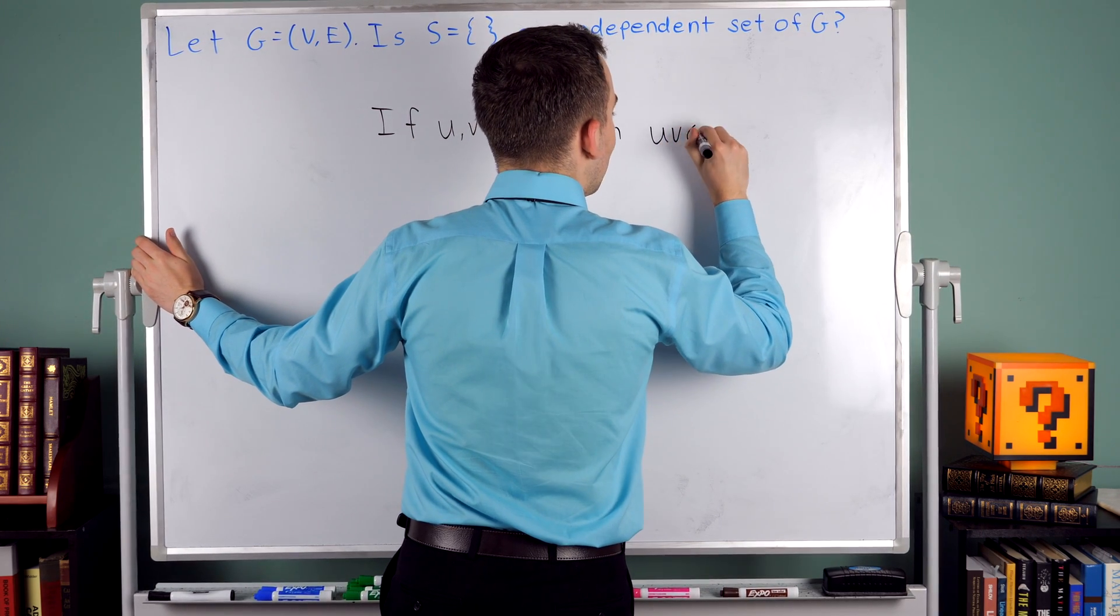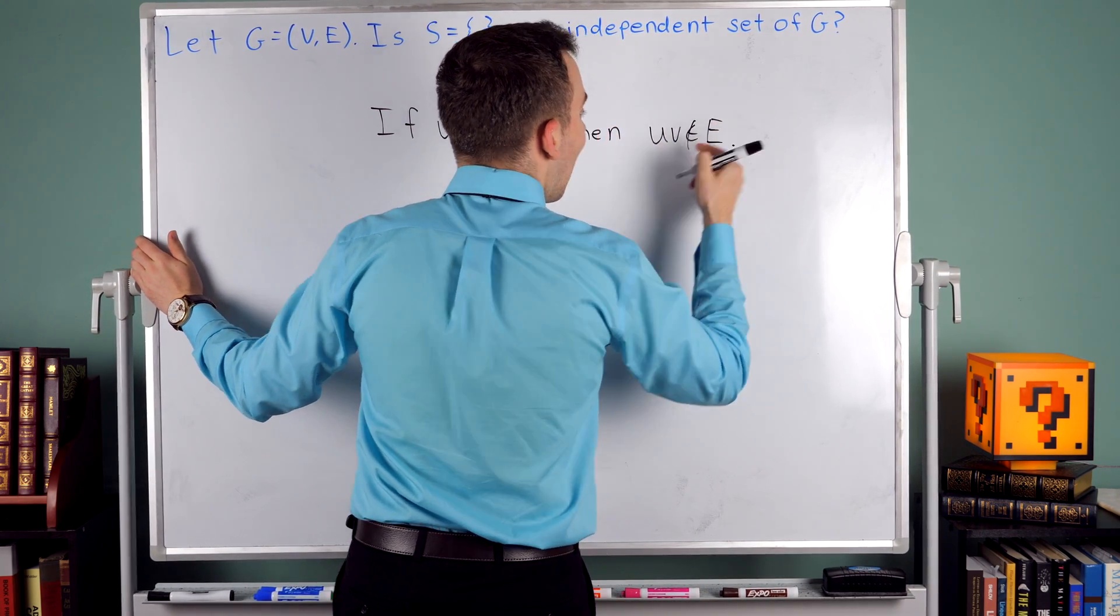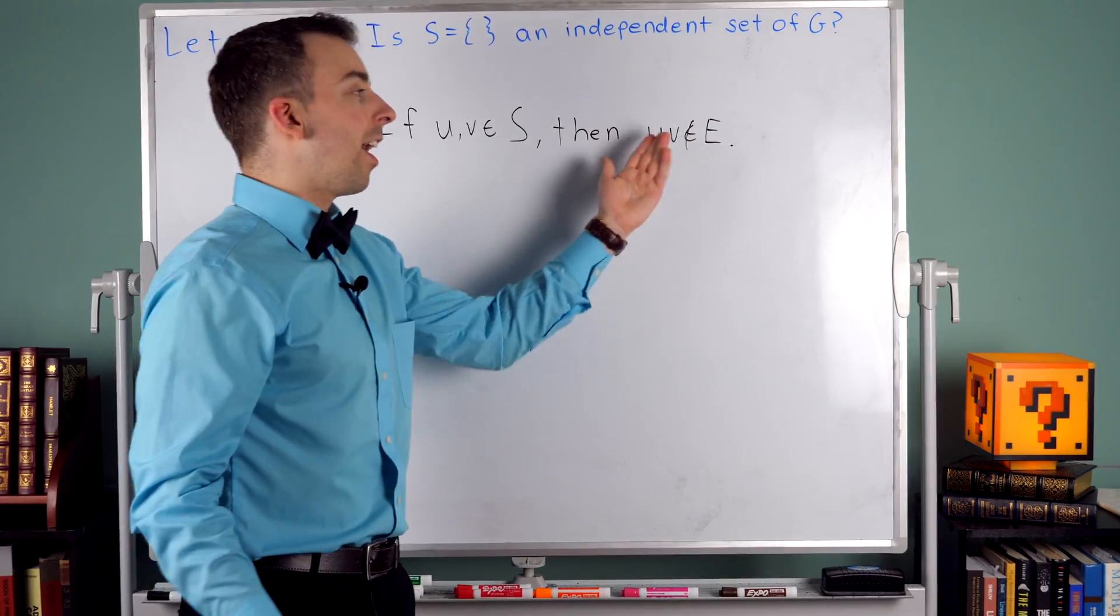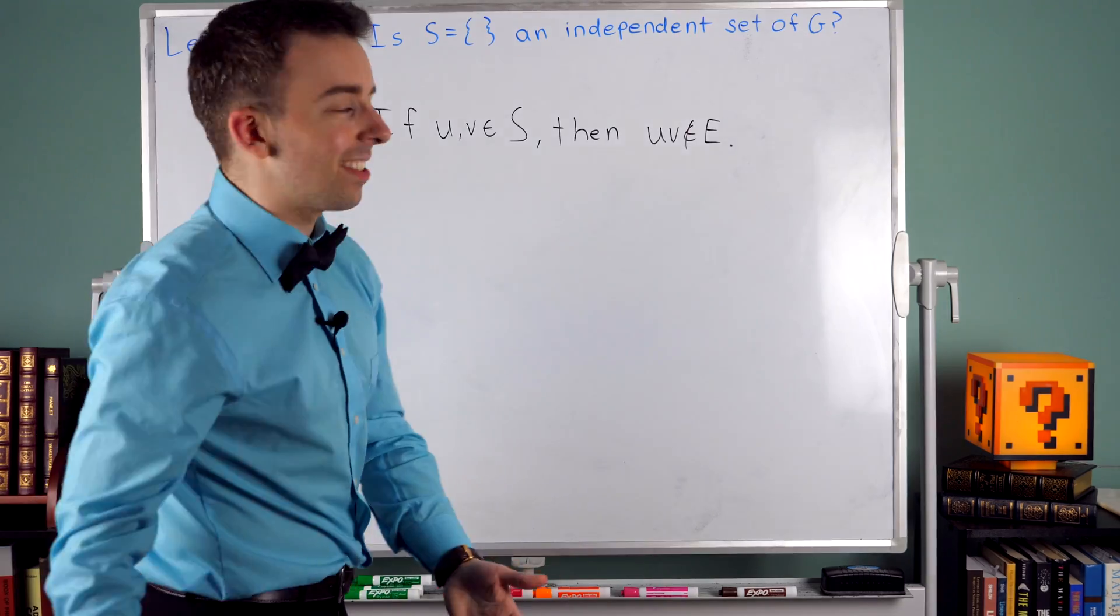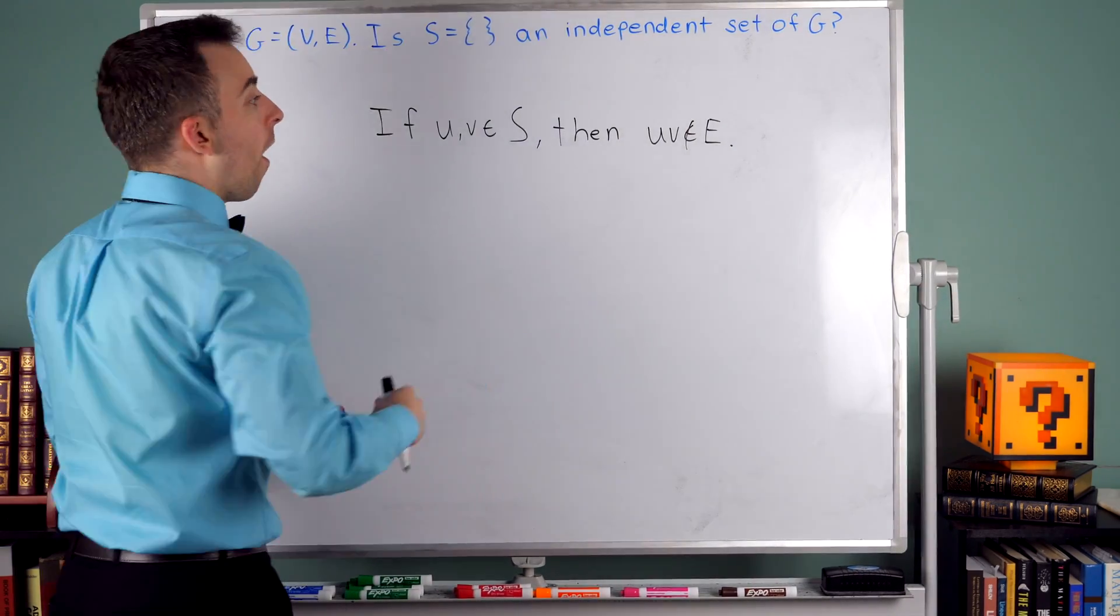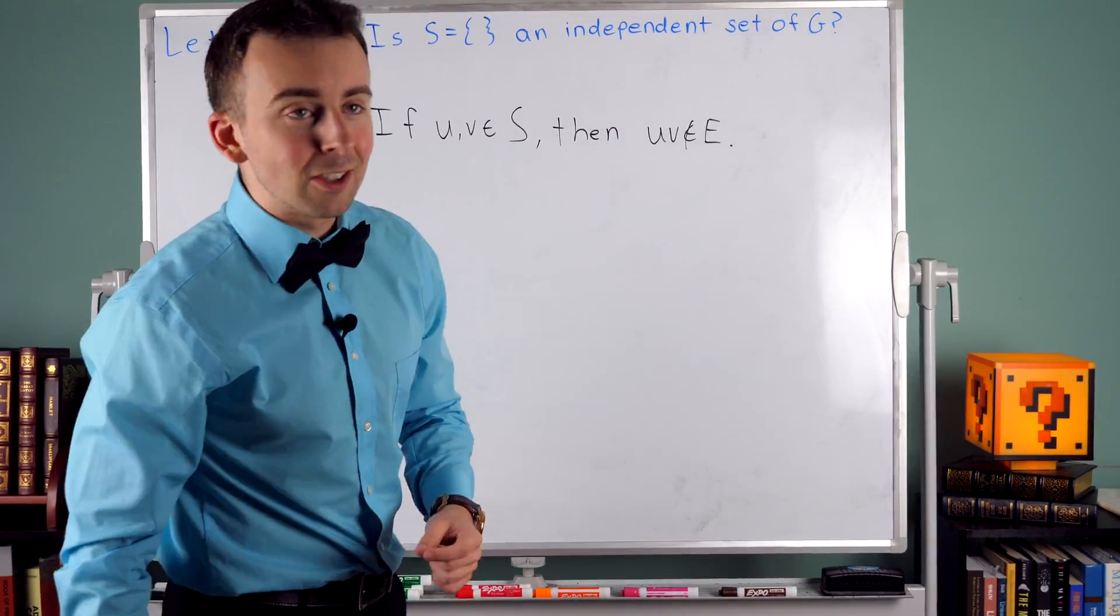then they are not adjacent. So then U, V is not an edge. U and V are not joined by an edge. That's what would make S an independent set. If any pair of vertices in S are not adjacent to each other.